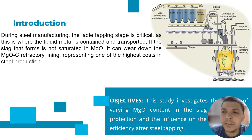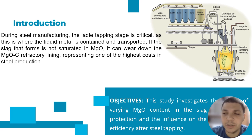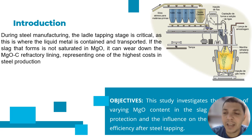To put it in context, we're talking about a research made in a fully integrated steel mill with blast furnaces and a BOF shop. This paper covers the period after converter tapping when a higher level of desulfurization is required due to low levels of sulfur content for this grade of steel. During steel manufacturing, the ladle tapping stage is critical — this is where the liquid metal is contained and transported. If the slag that forms is not saturated in MgO, it can wear down the MgO-carbon refractory lining, representing one of the highest costs in steel production.